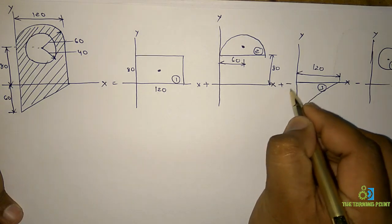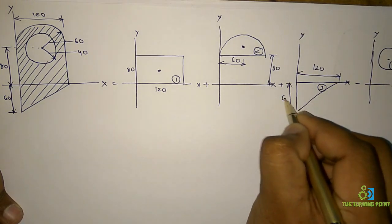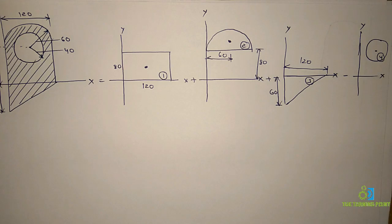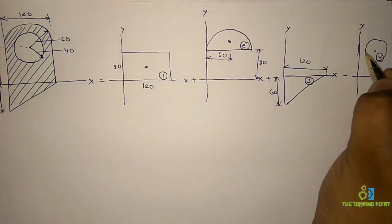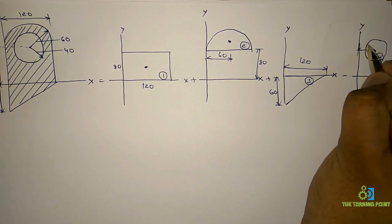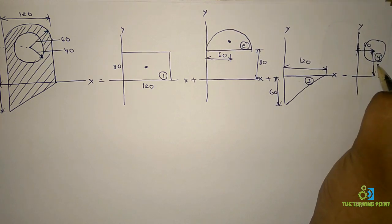The height of this triangle is 60. This distance is given as 60, and this distance is 80.